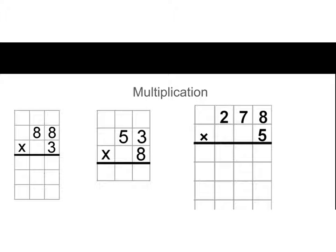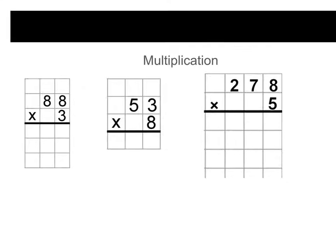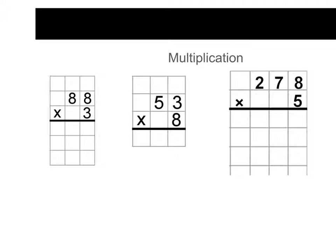Good evening, mathematicians. Tonight we are going to review how to multiply large numbers. So if we take a look over here, we have 88 times 3.